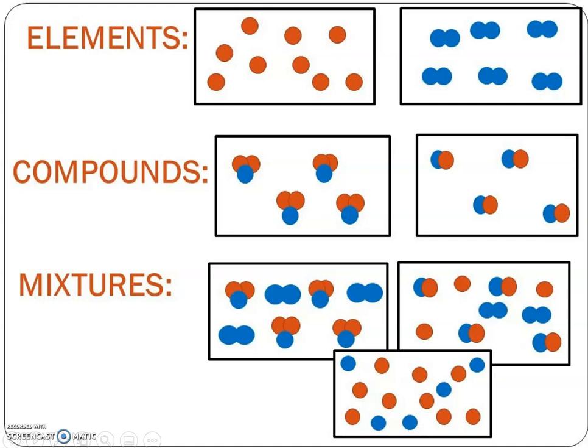Compounds, again, we're looking at definitely two elements that are bonded together. So here you see a two to one ratio. This would be like water. Here you're seeing a one to one ratio. This would be like carbon monoxide.